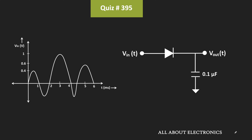But even if you don't know, then using simple analysis you can also find the output voltage. So here we have been given that initially the voltage across this capacitor is equal to 0.3V and this diode is the ideal diode. That means in the forward bias condition it will act as a short circuit and in the reverse bias condition it will act as an open circuit.